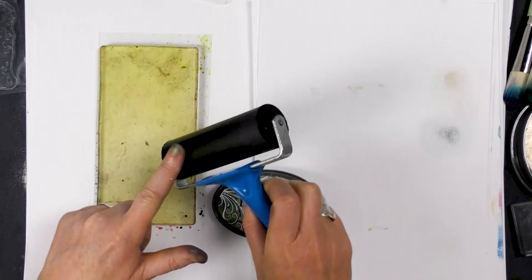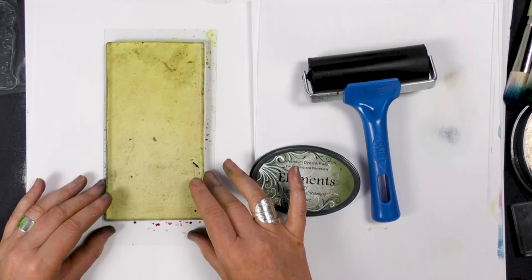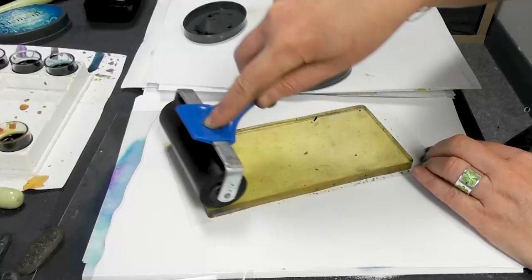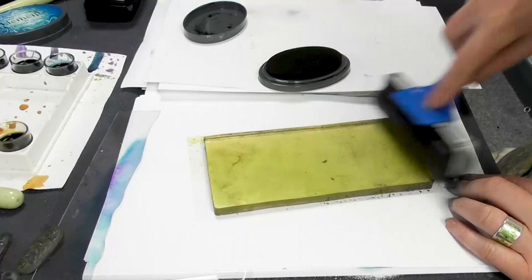We've got our brushos at hand as well and we're going to create a really nice background. Let's start with our base colour. Transfer that lovely olive over onto the gel press.